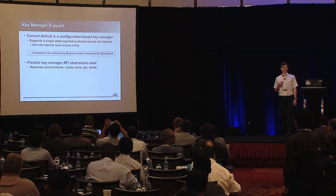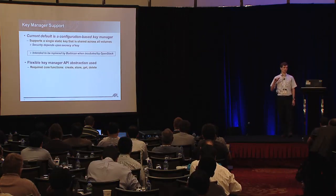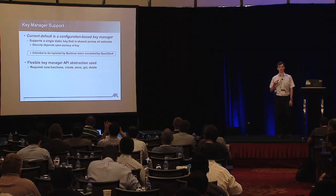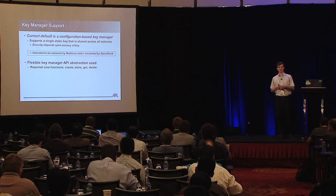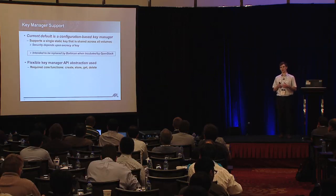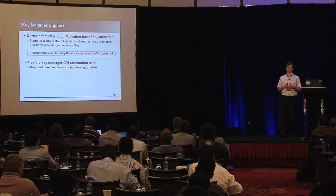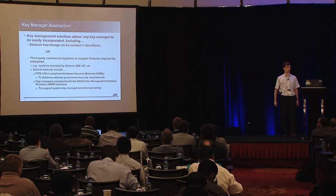The current default key management, before turning it over to Jarrett to talk about Barbican, is a very simple configuration-based key manager. This by itself is insecure, but it is a proof of concept as a stand-in while waiting for Barbican to be fully incubated by OpenStack. What we currently have in Havana is support for a single shared key — it is static and fixed, used by all volumes across all tenants. However, we have a very flexible key manager API abstraction that you could override with Barbican or any third-party key management appliance.